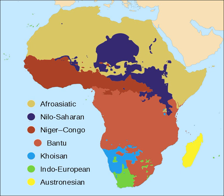The languages of Africa are divided into six major language families. Afroasiatic languages are spread throughout Western Asia, North Africa, the Horn of Africa and parts of the Sahel.